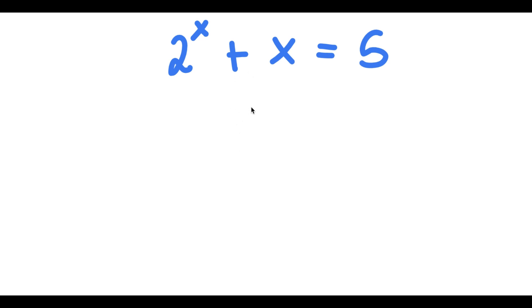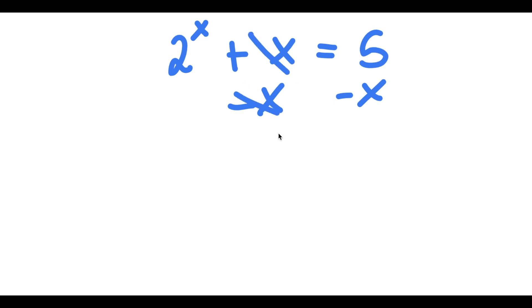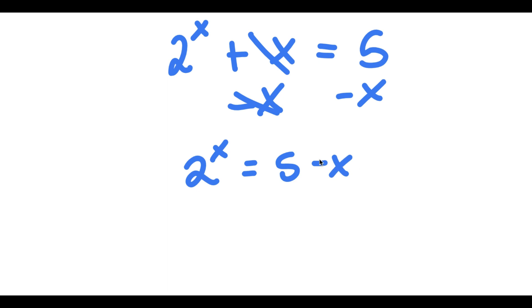On this problem, I have 2 to the power of x plus x equals 5. I'm going to first start by subtracting x on both sides. These two cancel out, and I get 2 to the power of x is equal to 5 minus x.